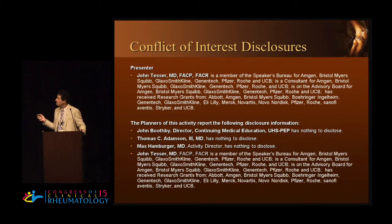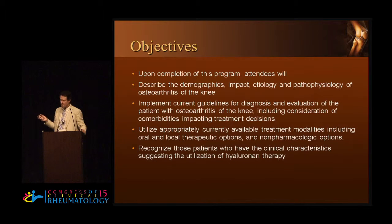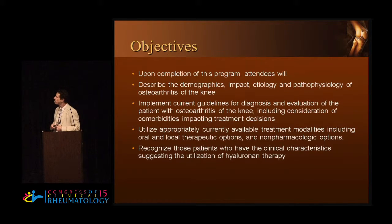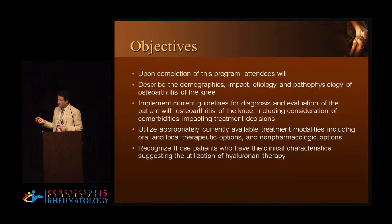There are my disclosures. Nobody else has disclosures except for me, so I put them up there twice so that you can see. The objectives here are basically to go through and allow you to identify the demographics, the impact, the pathophysiology, and etiology of osteoarthritis of the knee; to implement current guidelines for evaluating patients with OA of the knee, including considerations of comorbidities; and to understand the various types of treatment modalities, and ultimately to look at the types of patients that might be the best to receive hyaluronan therapy.